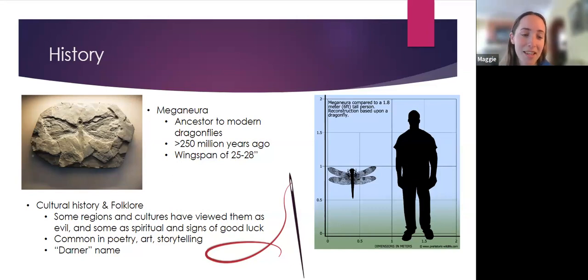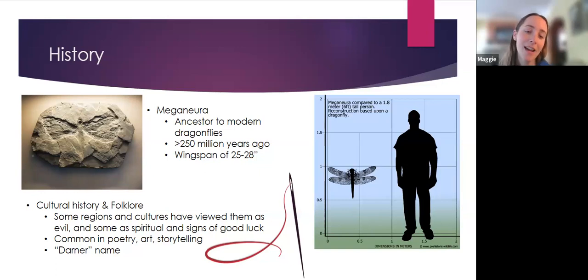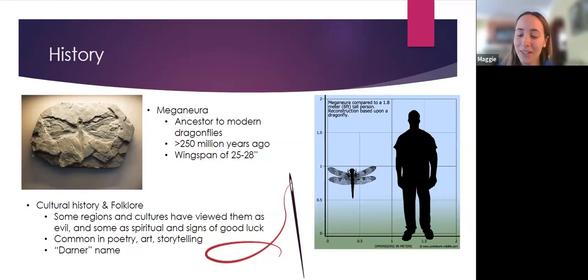There was an old tale about the Darner — a family of dragonflies — where adults would tell naughty kids that if they weren't quiet or didn't tell the truth, a Darner dragonfly would come in the night and sew their mouth and ears and eyes shut. So there are a lot of different stories when it comes to dragonflies.